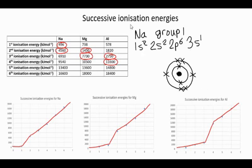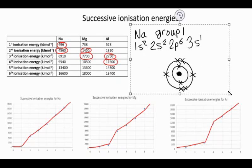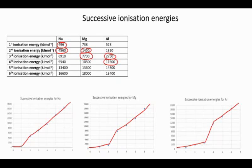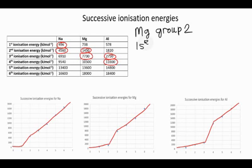And then so on — we're taking electrons away from shells closer to the nucleus. So let's have a look at magnesium. Magnesium's a group 2 metal, and the big jump in ionization energy is between the second and third ionization energy. The configuration for magnesium is 1S2, 2S2, 2P6, 3S2.